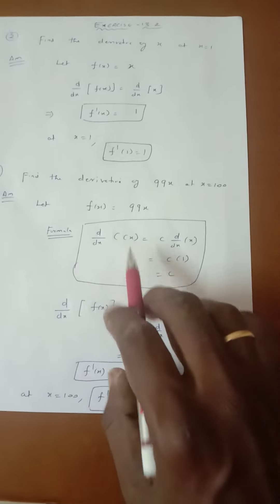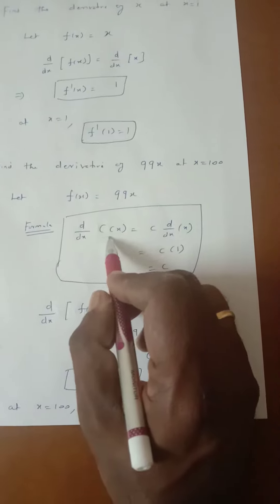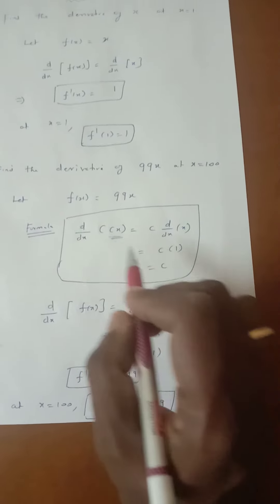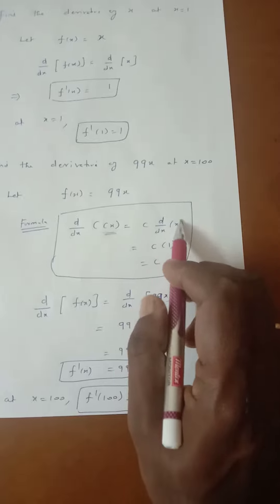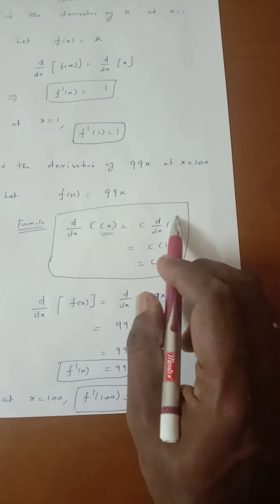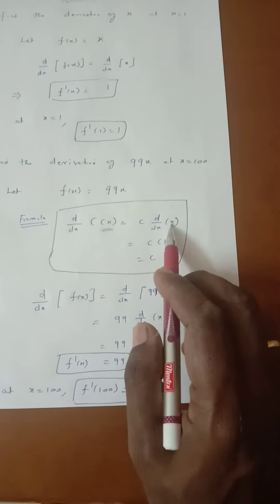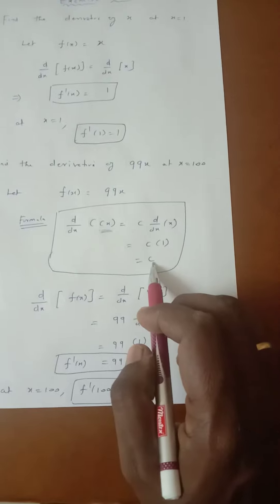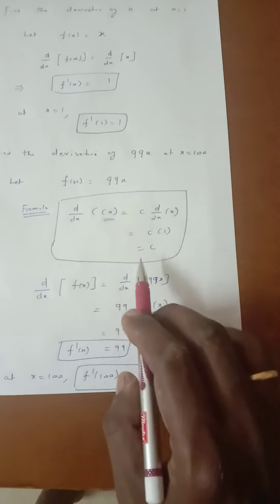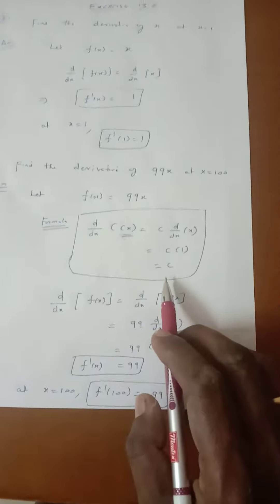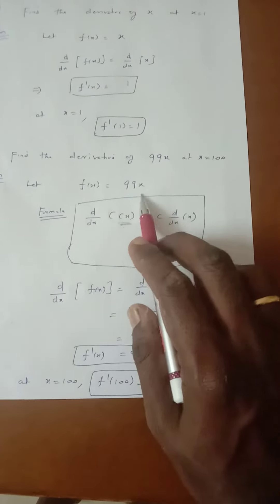The formula is d by dx of cx: when a constant is multiplying a function, the constant is taken outside and the function inside, giving c into d by dx of x. Since d by dx of x equals 1, the result is c. So the differentiation of cx equals c. This formula will be applied in this sum.